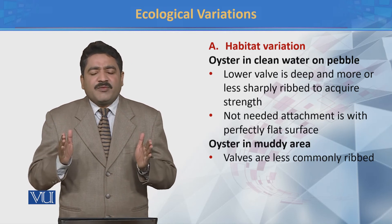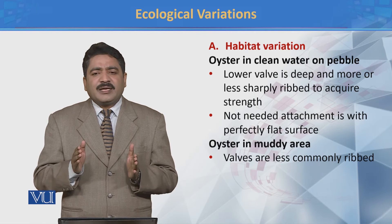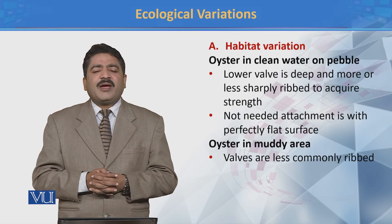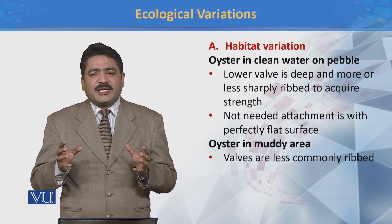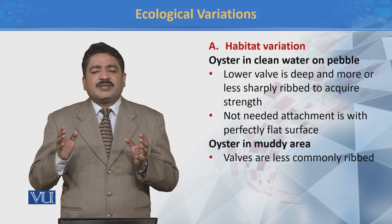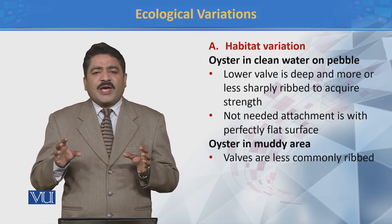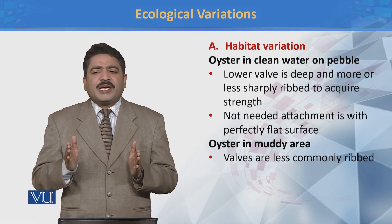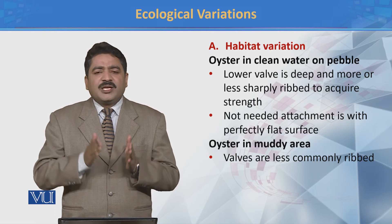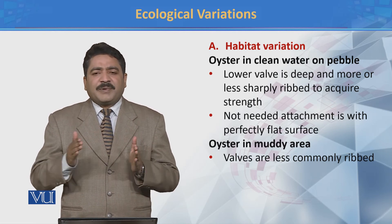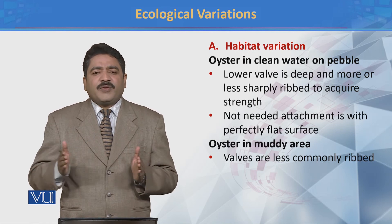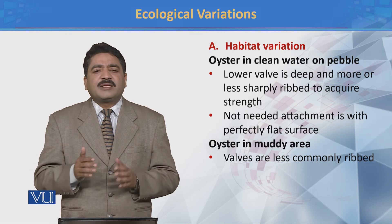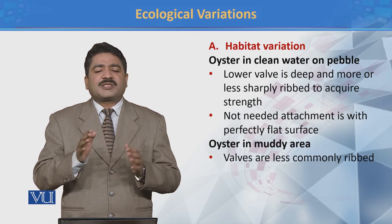This variation occurs because of different habitats — the surface available is different, so the structure of the organism is different, and the strength of the surface can change. So this is an ecological variation: different habitats have different conditions, and organisms vary accordingly so they can properly adjust themselves.